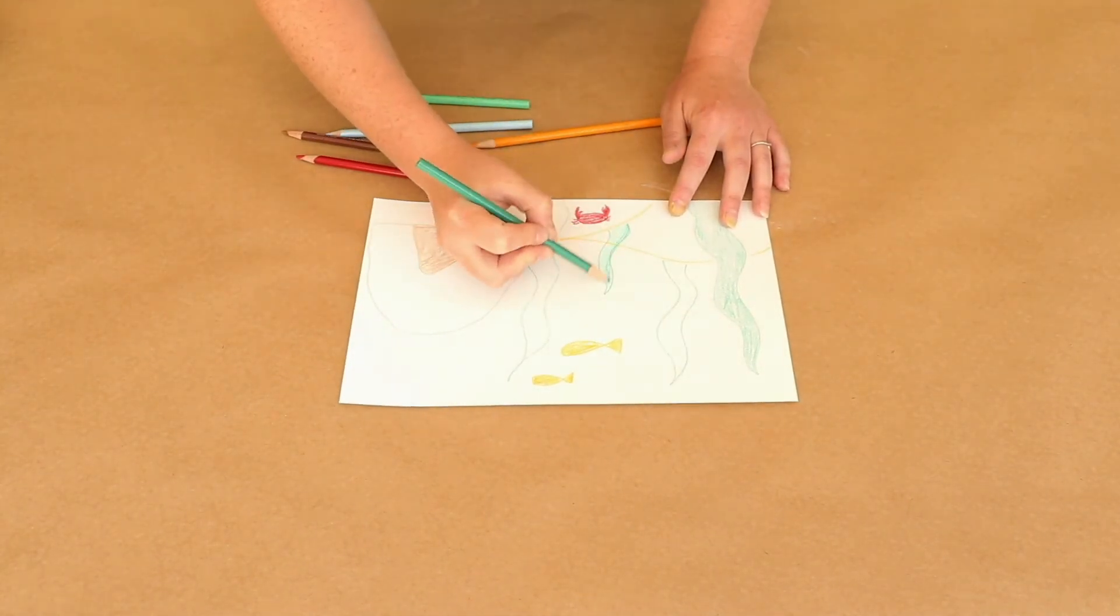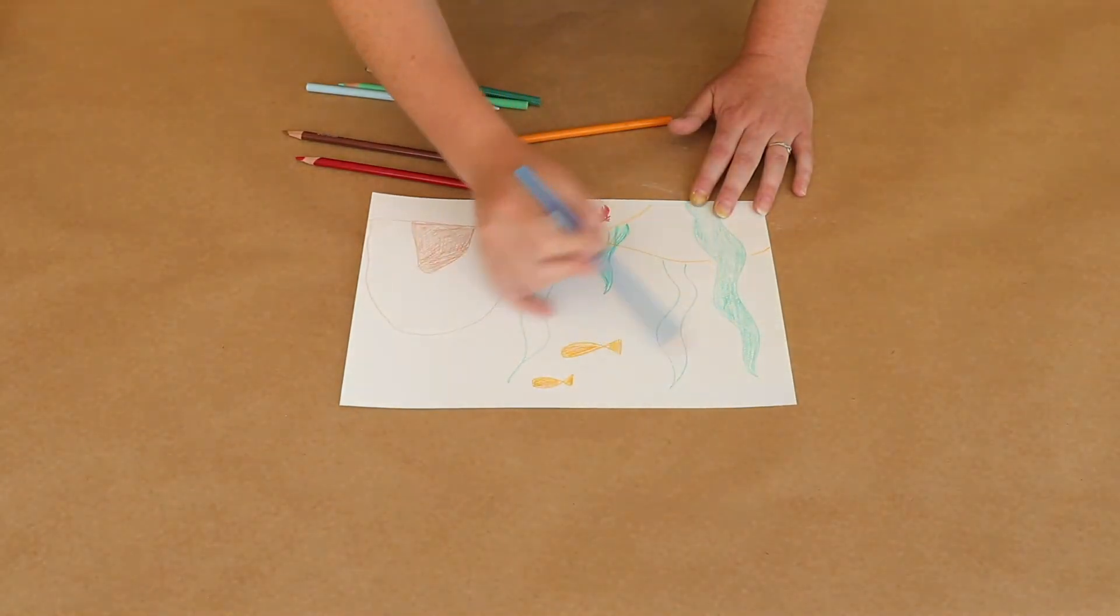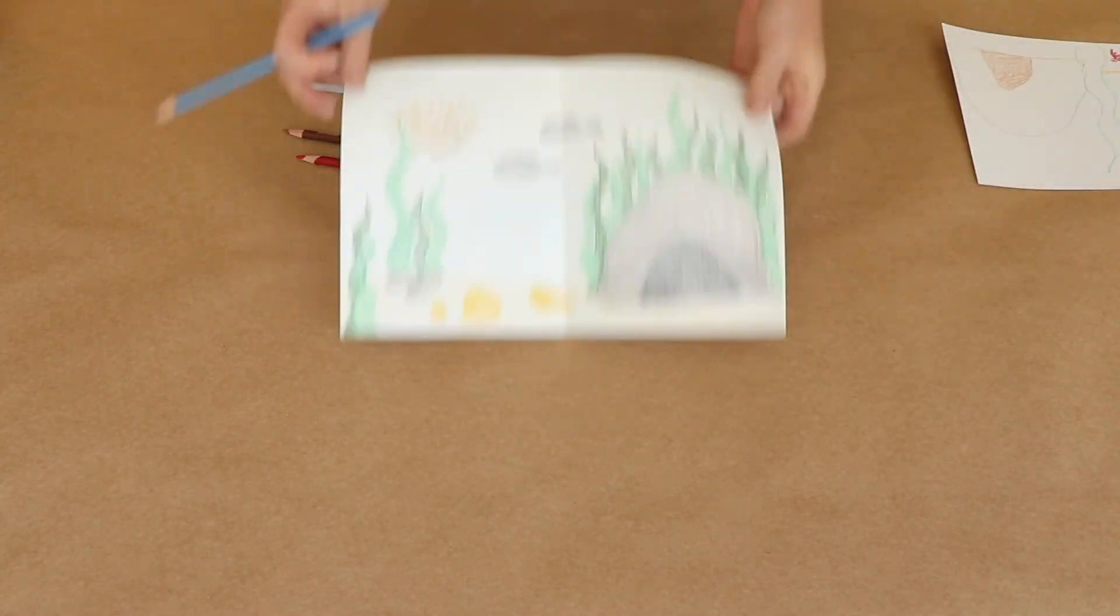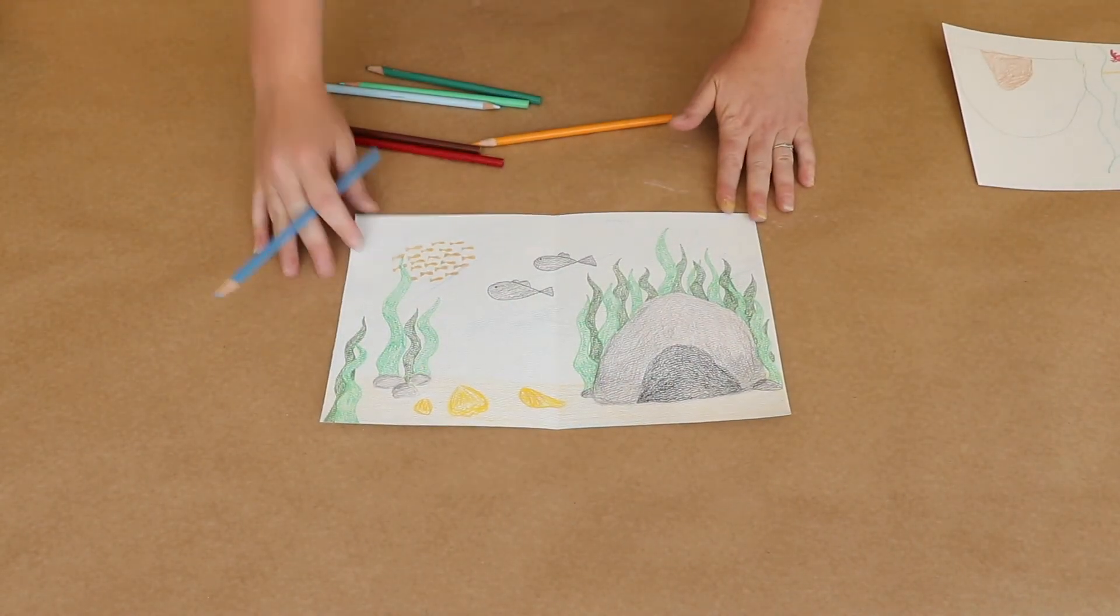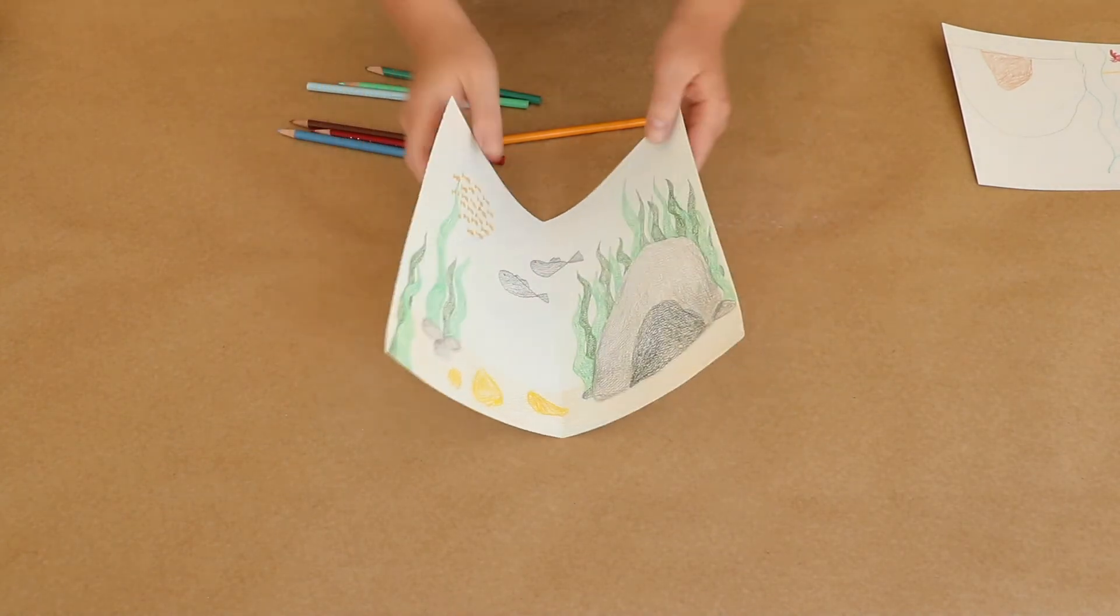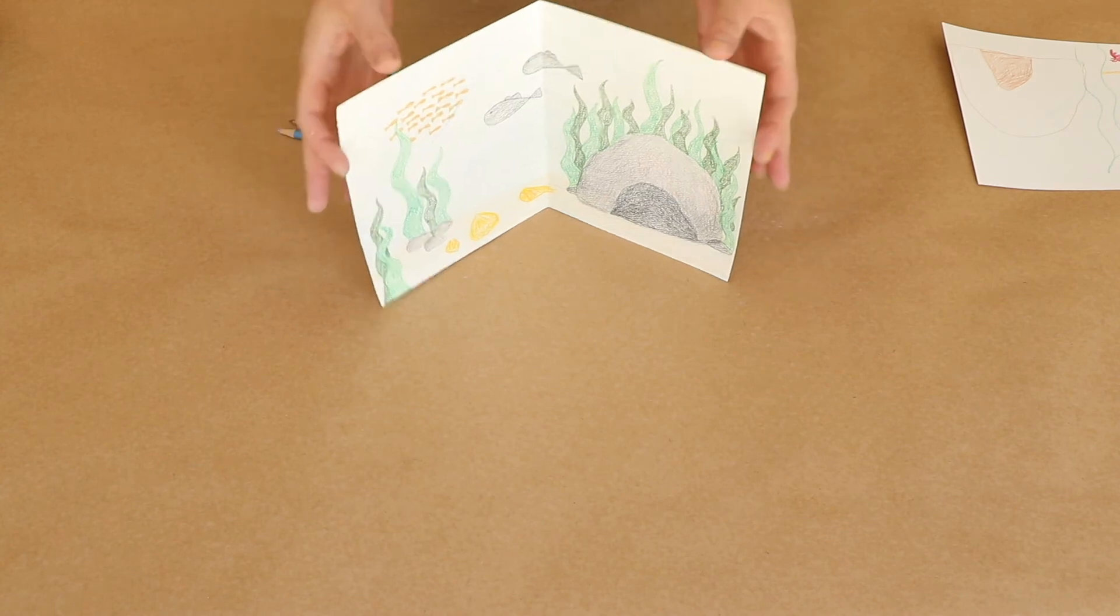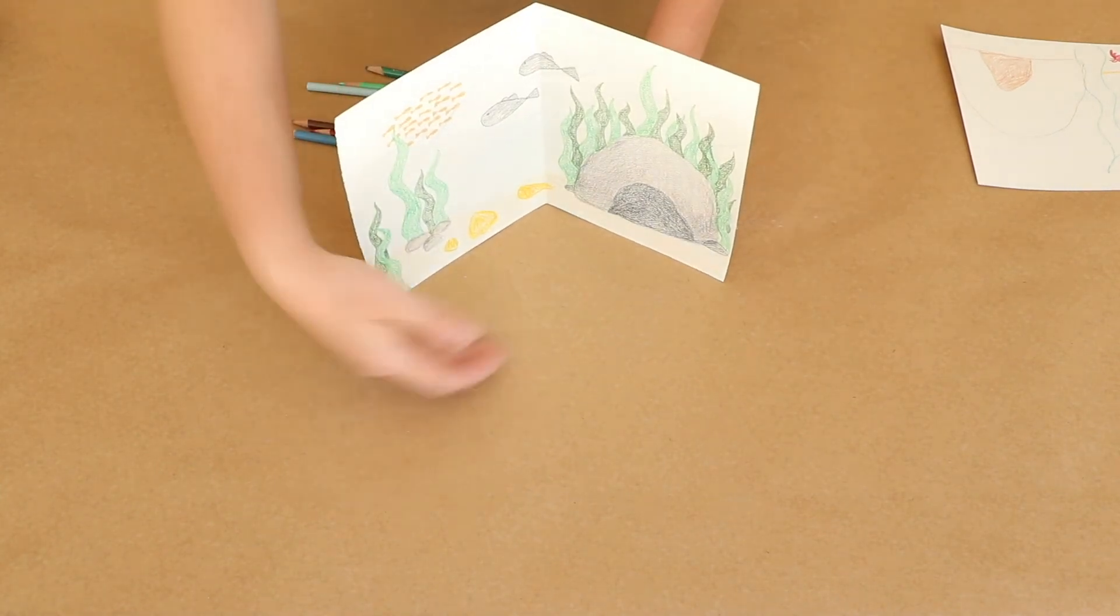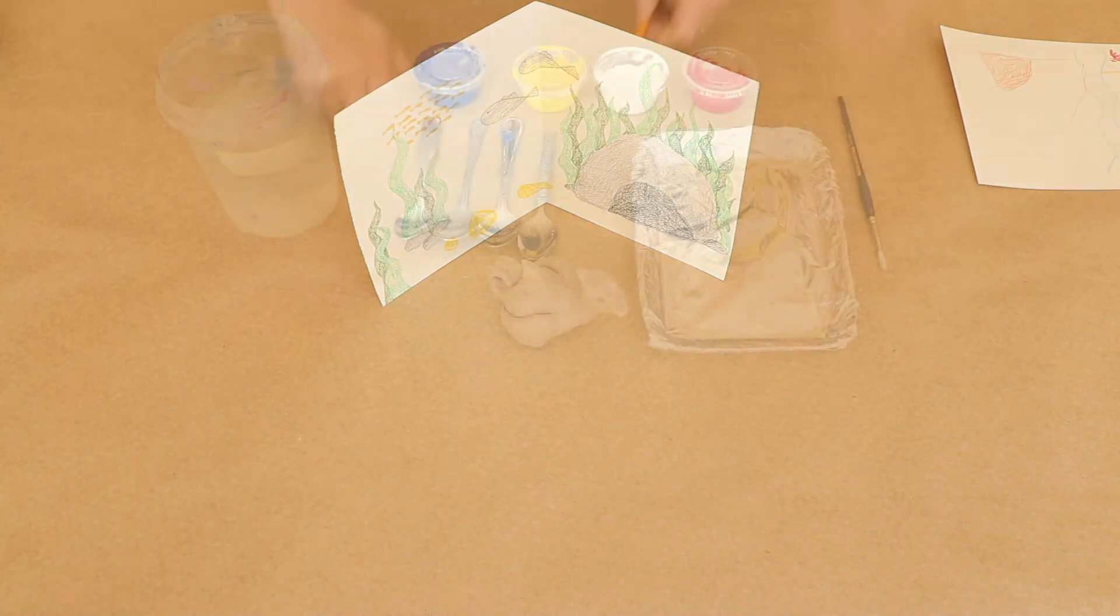Once you've colored everything in, you can go over it with some blue to add some water. You can then fold it in half and prop it up so that your sea creature can sit in between the sea.